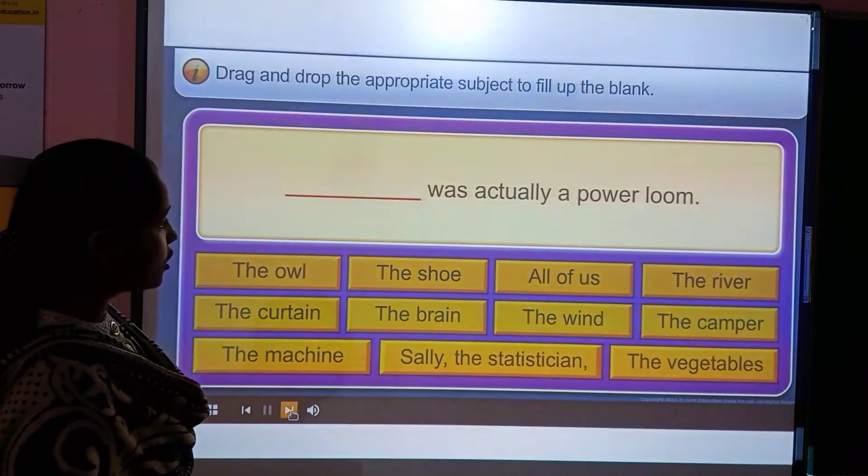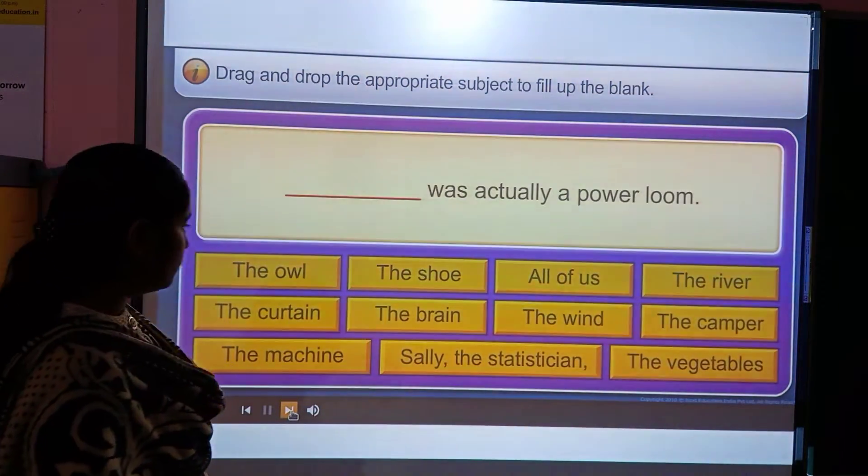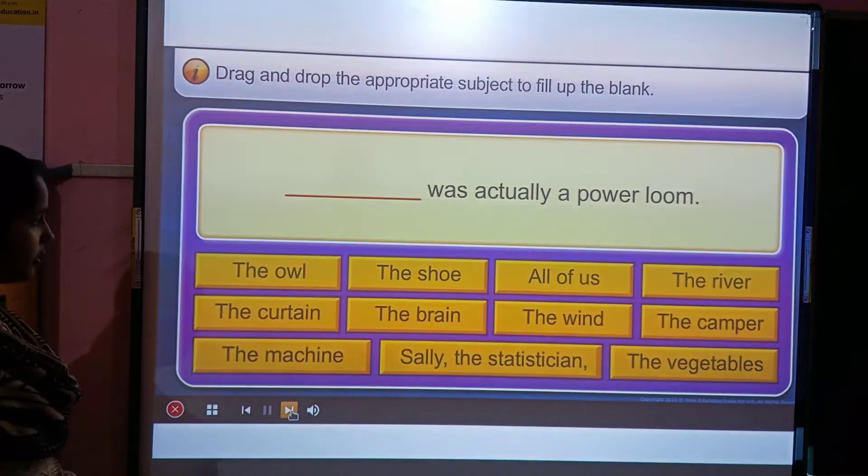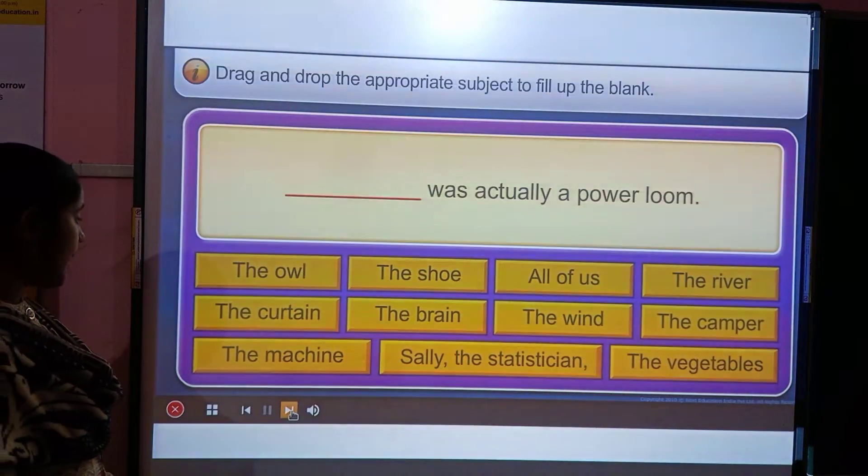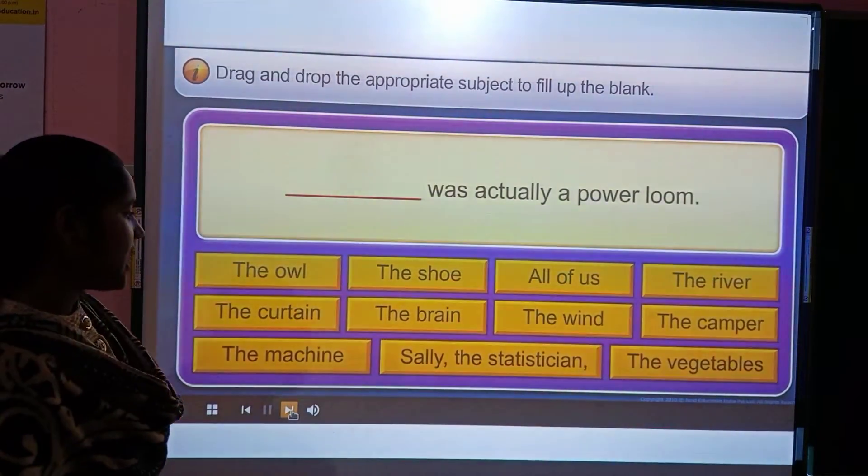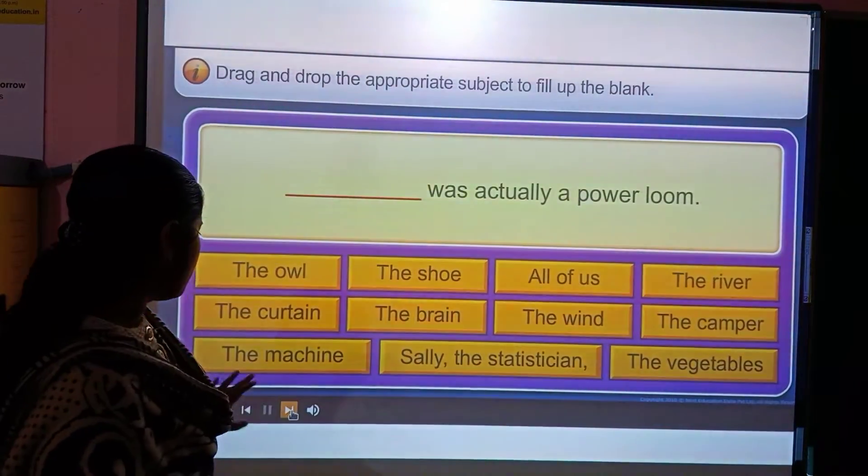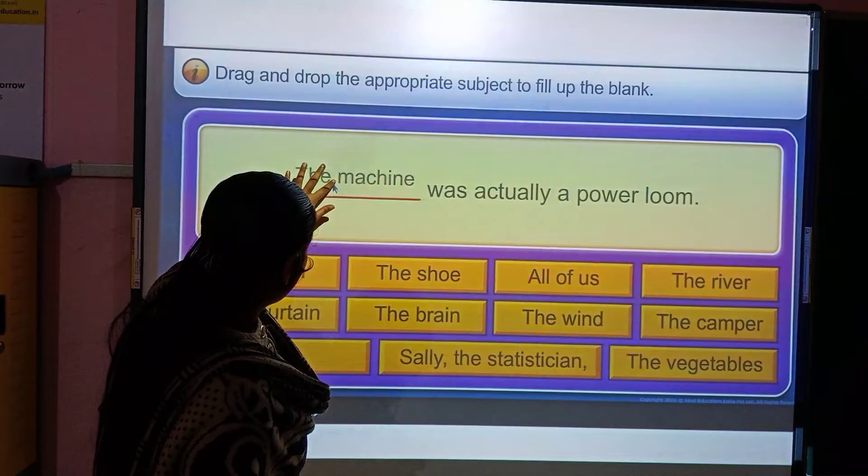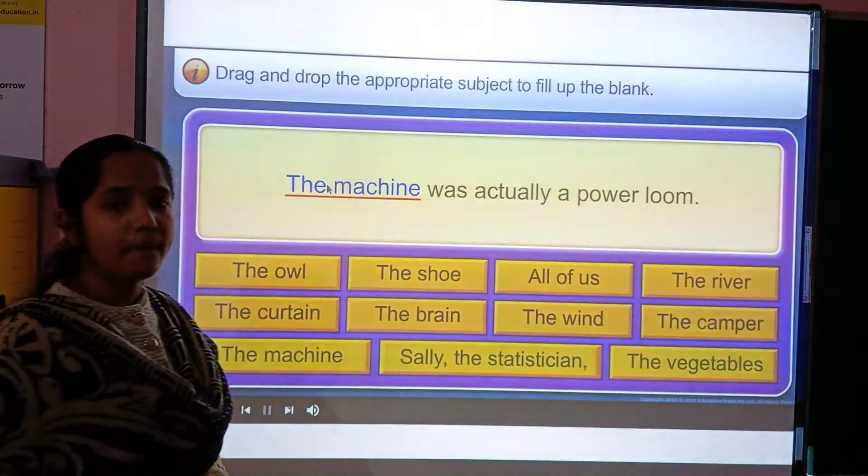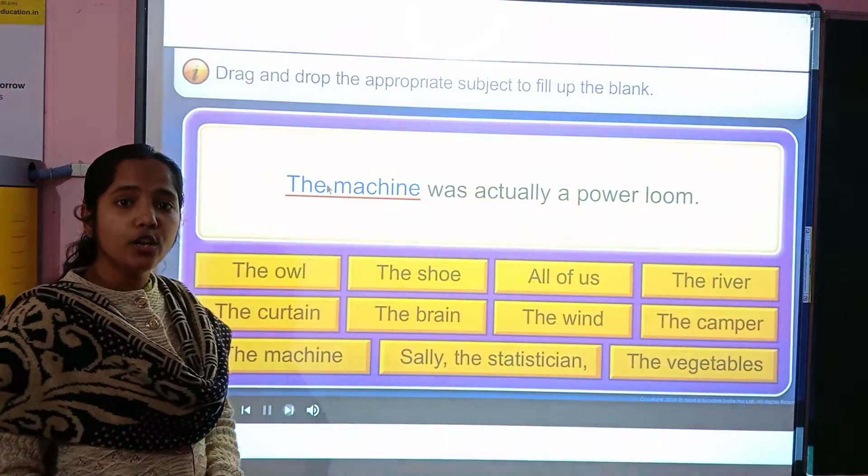Next, dash was actually a power loom. The owl, the shoe, the river, the curtain, the brain, the wind, the camper, the machine, Sally the statistician, the vegetables, and the machine. Yes, the machine was actually a power loom. Understood?